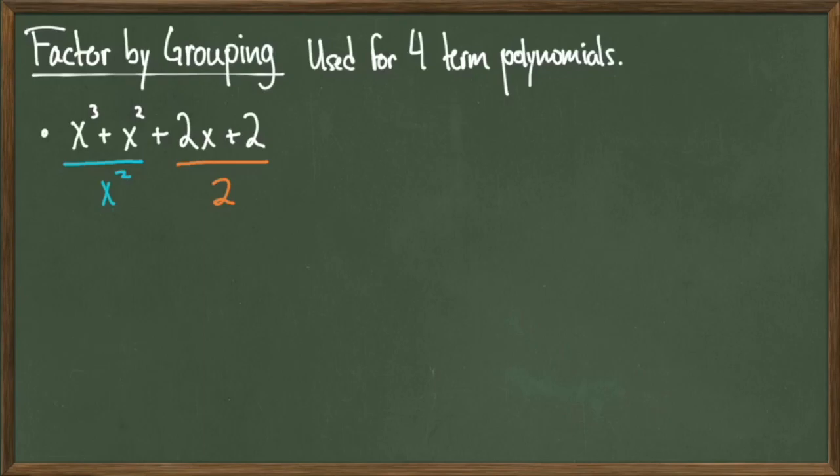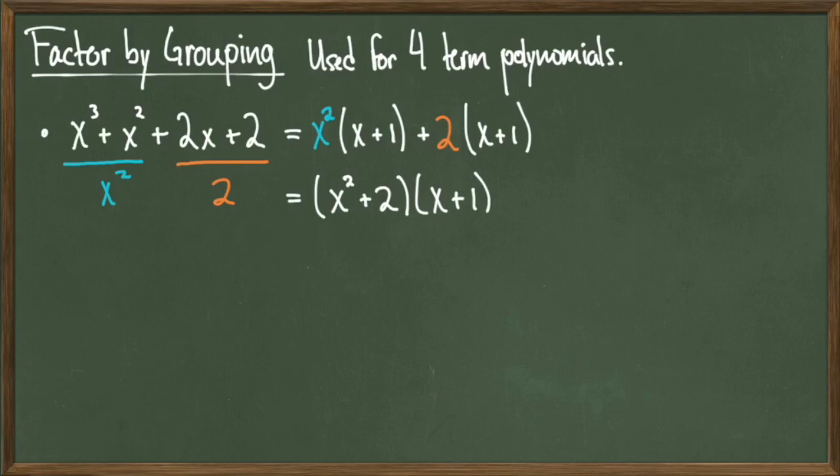So what I'm going to do is factor x squared and 2 away from those respective parts of this polynomial and rewrite my expression as x squared times the quantity x plus 1 plus 2 times the quantity x plus 1. So I am doing something very similar to what I did in the previous slide, just on a smaller scale. But we notice that we have the quantity x plus 1 showing up in two different locations. So what I can actually do is factor out the x plus 1 and leave behind the x squared and the 2. Doing so gives me a revised expression that looks like this.